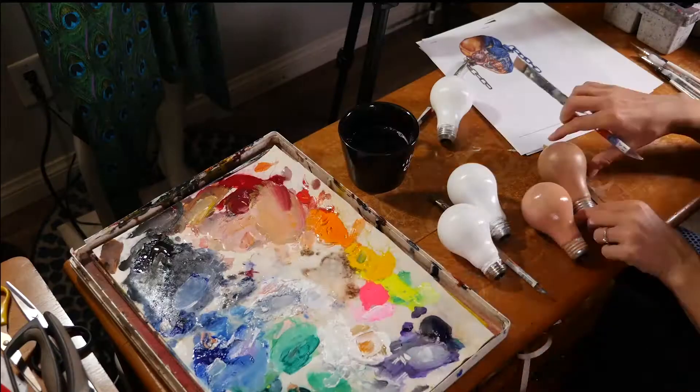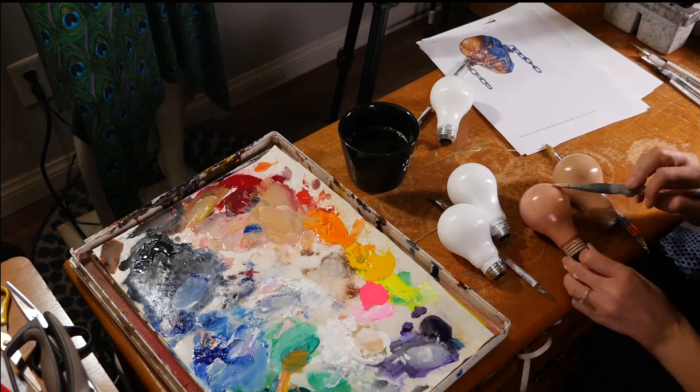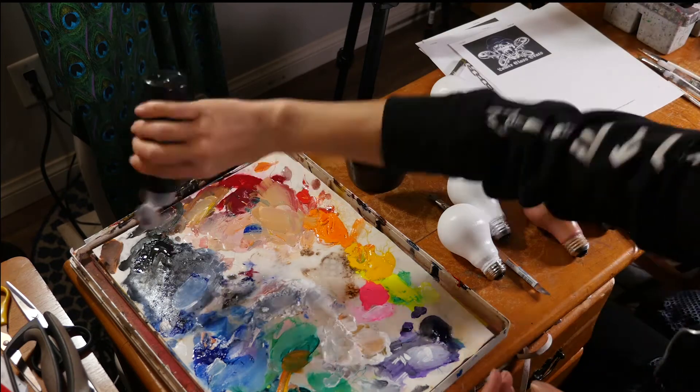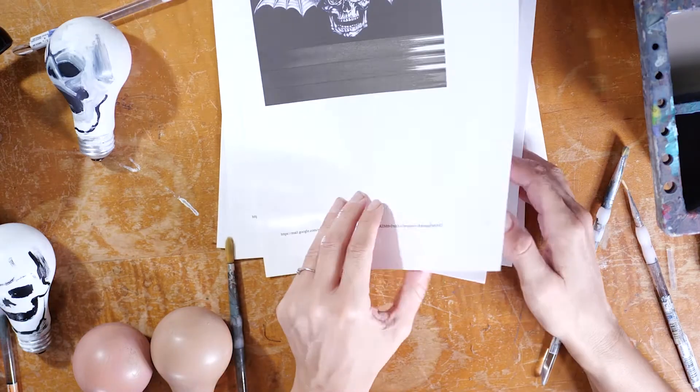You're going to want to base coat the entire light bulb in this. So, you'll have to paint it one side at a time and it'll take several coats to get it nice and opaque.